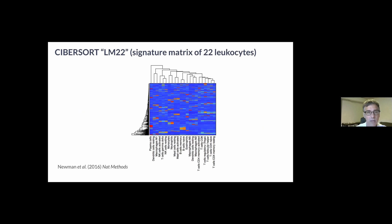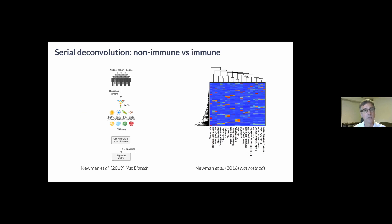The CIBERSORT so-called LM22 signature matrix was defined from 22 leukocyte populations isolated from the peripheral blood or bone marrow of healthy donors. It consists of about 550 genes that were differentially expressed between one cell type and all others.